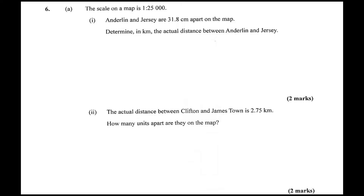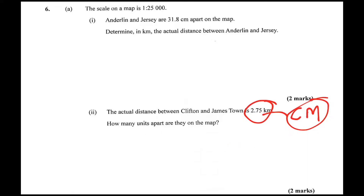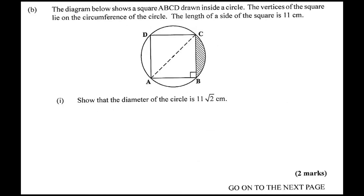The actual distance between Clifton and Jamestown is two-point-seven-five. So you need to go backwards now — change this to centimeters, and then divide by twenty-five thousand to get the actual units in centimeters on the map. The units are a little vague there, but that's the approach. Moving on to the next part of the question.